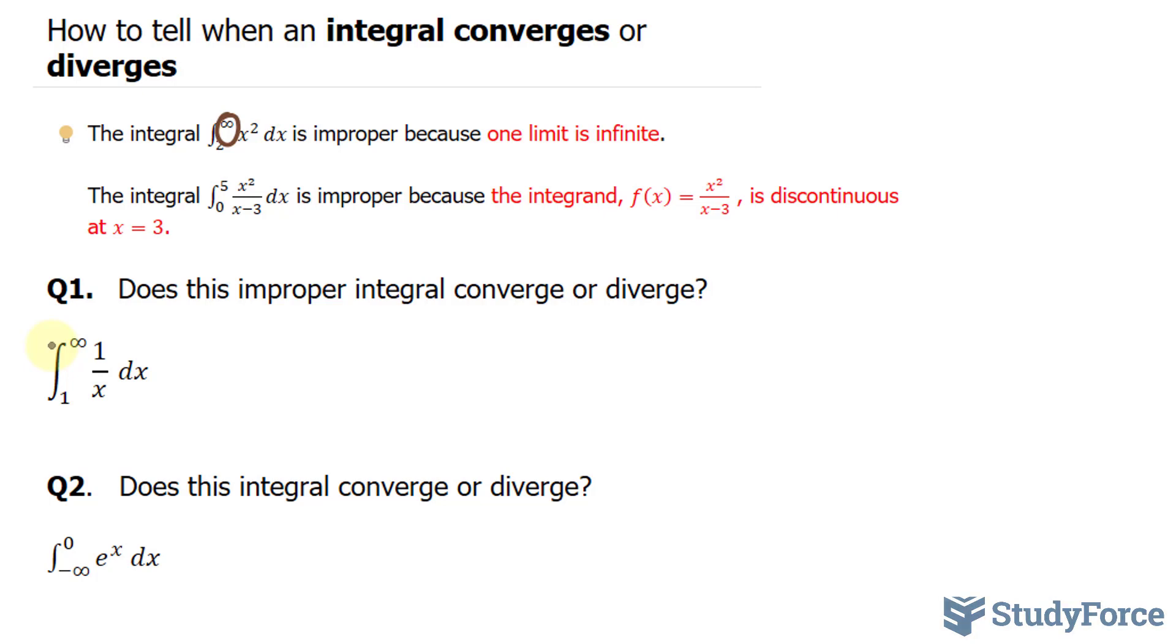On the other hand, if the limit does not exist and it goes to infinity or negative infinity, then we say that the integral diverges and therefore does not exist.